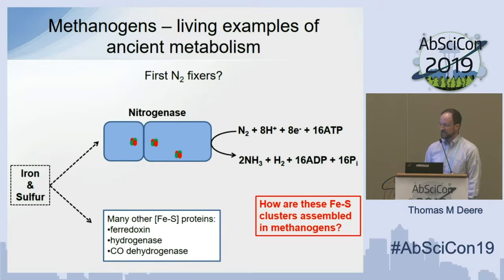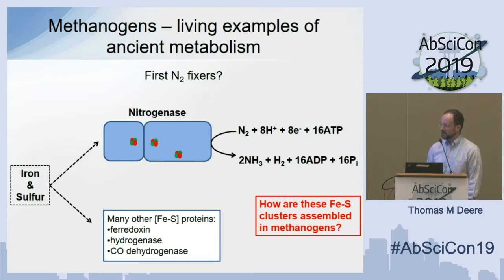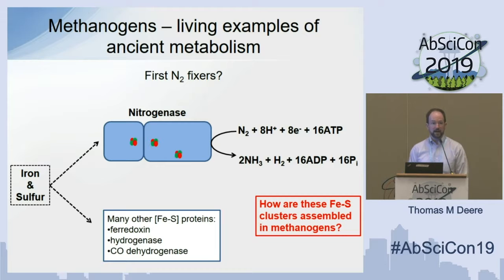Methanogens notably code for a lot of other iron-sulfur proteins that are of interest to astrobiologists and people studying early Earth, including ferredoxins, hydrogenase, and carbon monoxide dehydrogenase. But given that all of these iron-sulfur clusters are needed in methanogens, we know little to nothing about how they're actually being assembled.